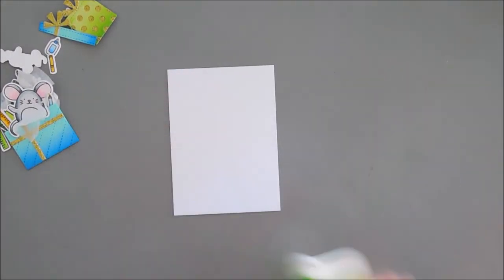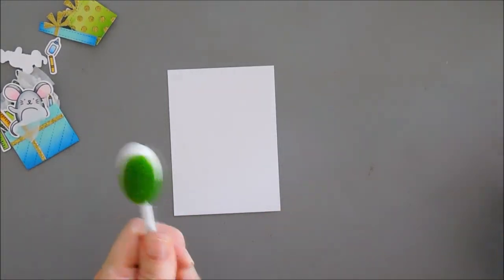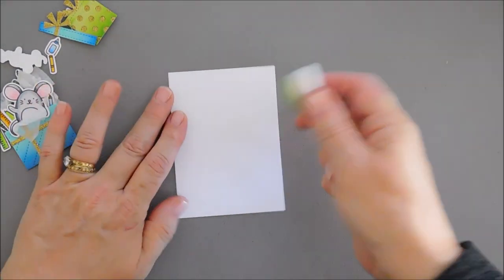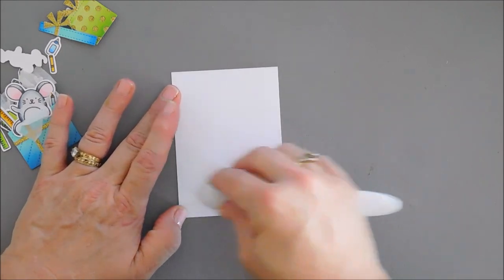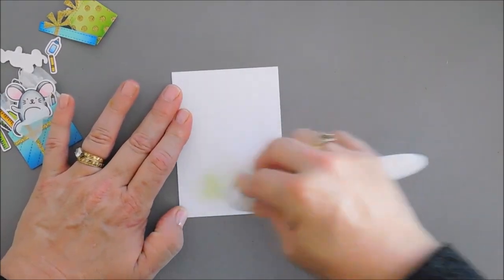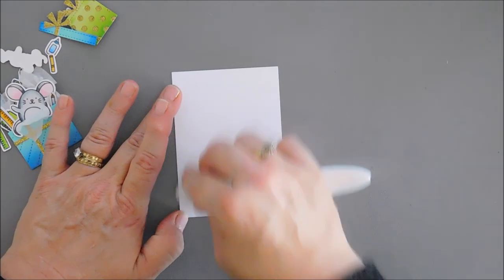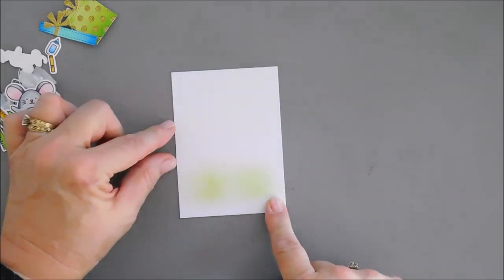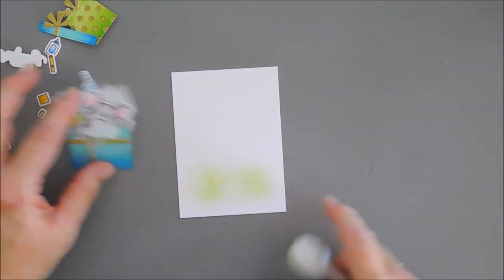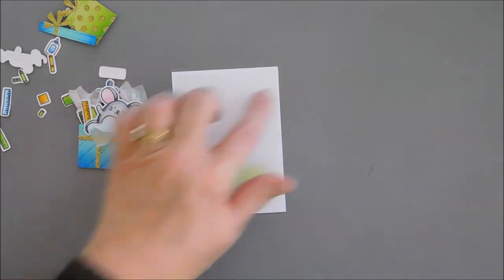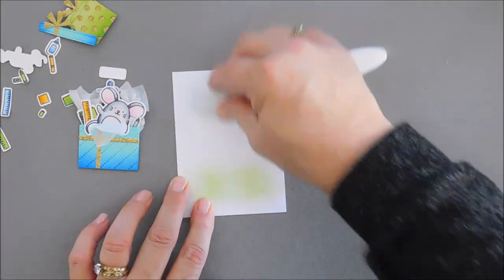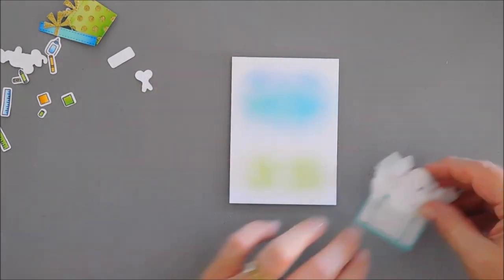There's still ink on here, so I'm using my blue and my green. And I'm going to add the green to the bottom. And I really don't need too much because for the most part, this section is going to be covered with our gift. But I do want to add a little color up here.